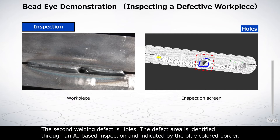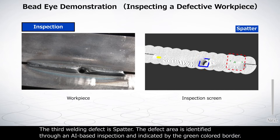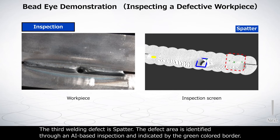The second welding defect is holes. The defect area is identified through an AI-based inspection and indicated by the blue-colored border. The third welding defect is spatter. The defect area is identified through an AI-based inspection and indicated by the green-colored border.